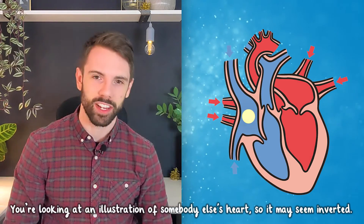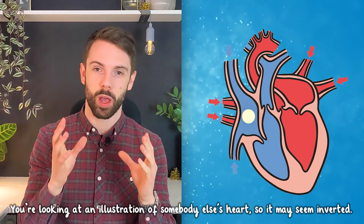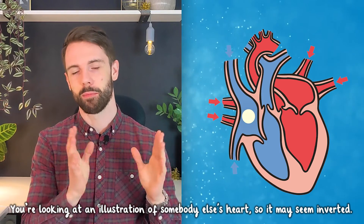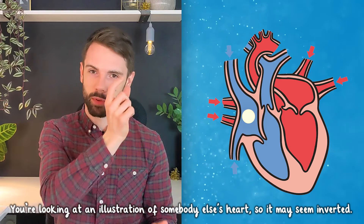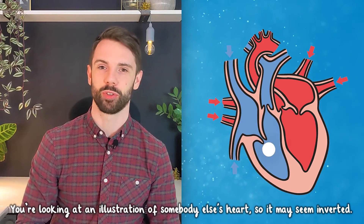Let's talk about the whole cycle that repeats in your body and my body every single moment. Your heart has four chambers and works together like a coordinated machine. It's a cycle, so it doesn't really start, but we'll say it starts in the right atrium, where deoxygenated blood — blood without oxygen — pools before dropping down to the right ventricle.